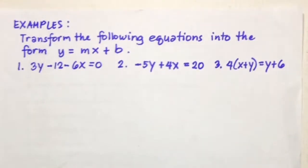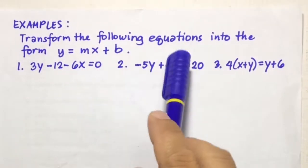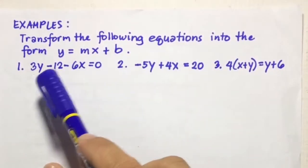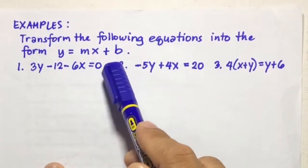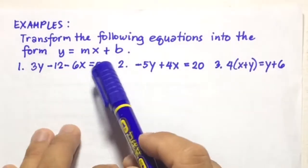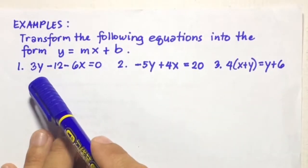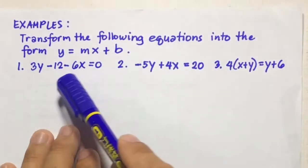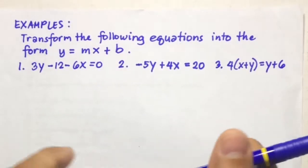Let's have some examples. Transform the following equations into the form Y equals MX plus B. So number 1: 3Y minus 12 minus 6X equals 0.